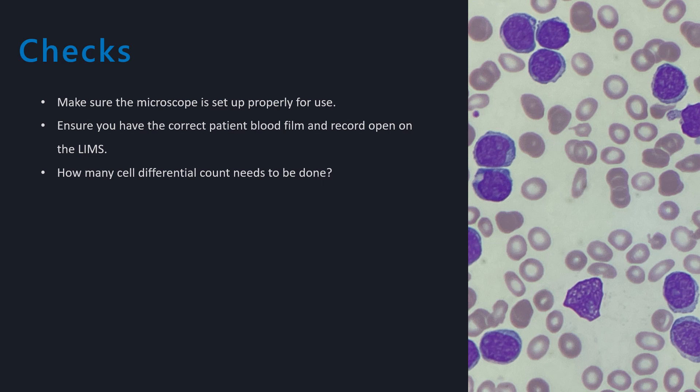Secondly, it's useful to know how many cells will be counted. Most laboratory information management systems default to 100 cells, but if the total white cell count is high, it may be better to do a 200 or 300 cell count to give an accurate representation of the cells present. If the total white cell count is low, then a 50 cell count may be enough as the white cells are so scanty.